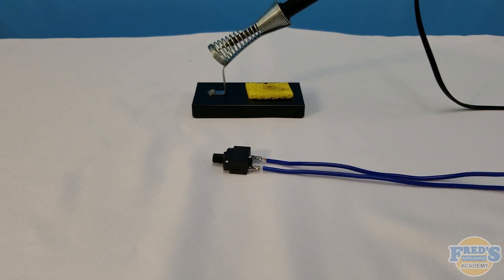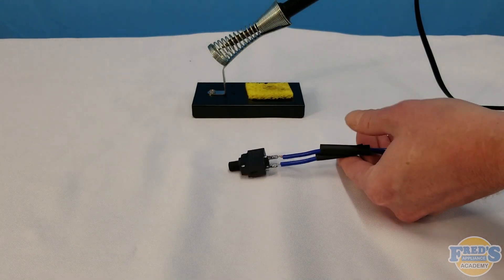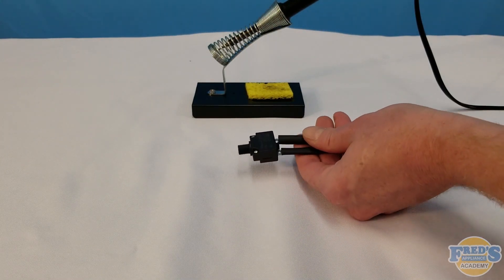Once your solder connections are complete, go ahead and slide up the shrink tube to cover up any terminals and exposed wiring.